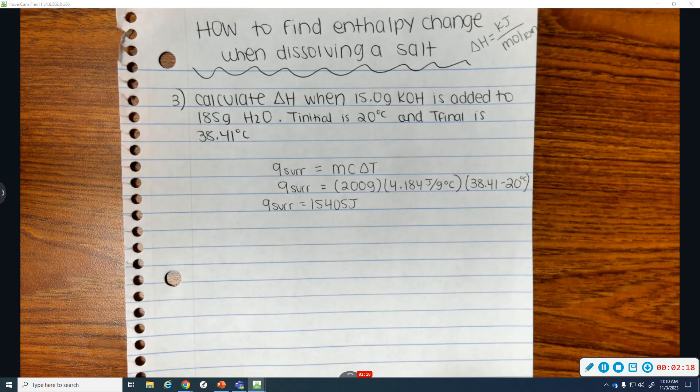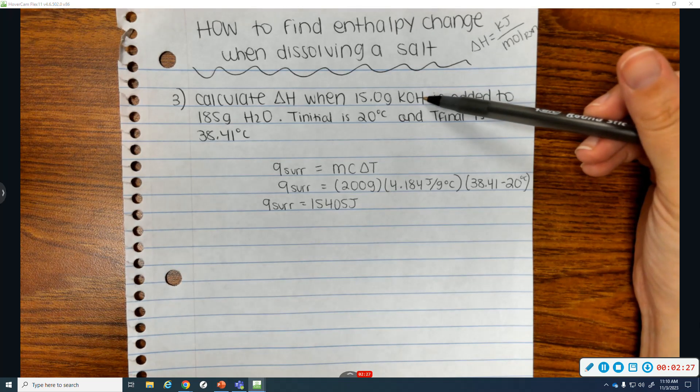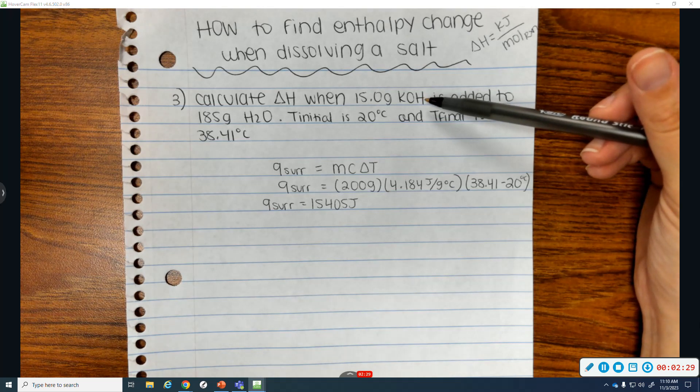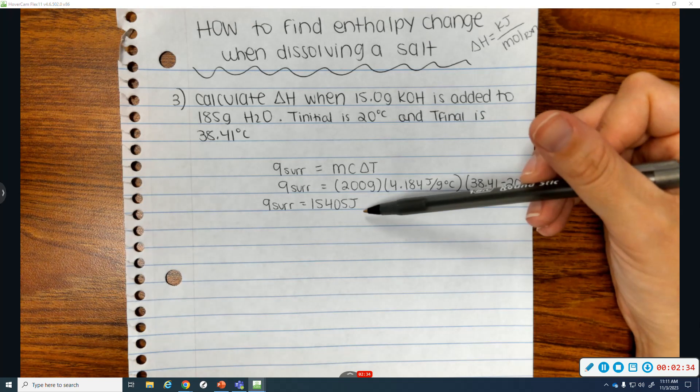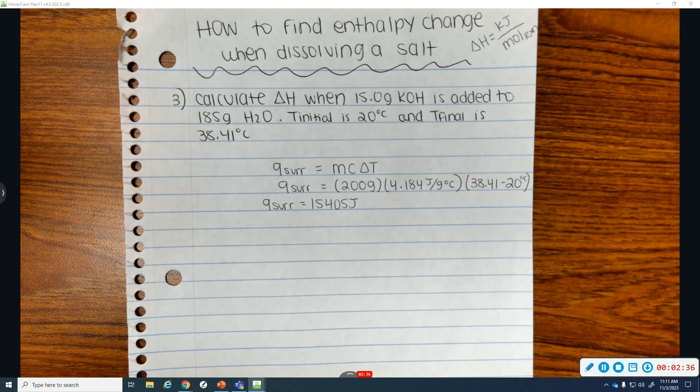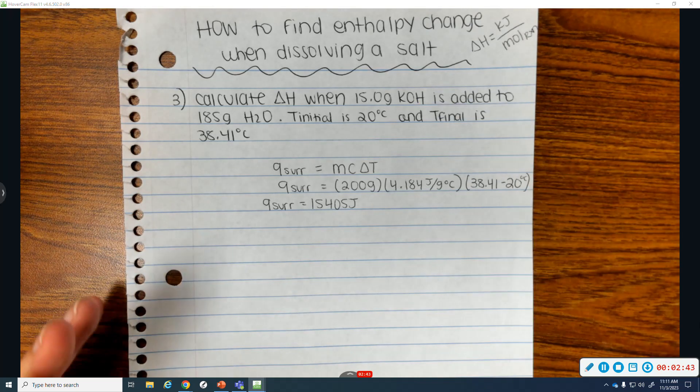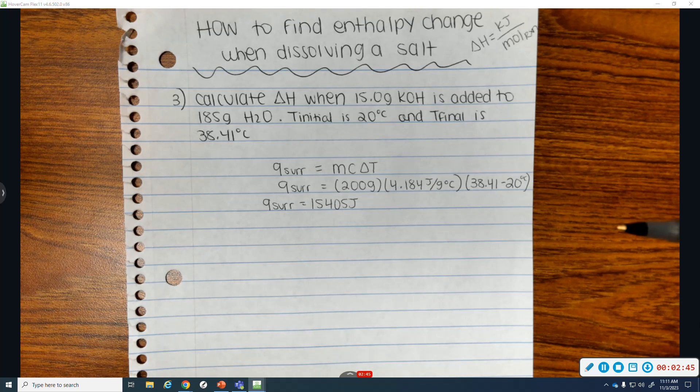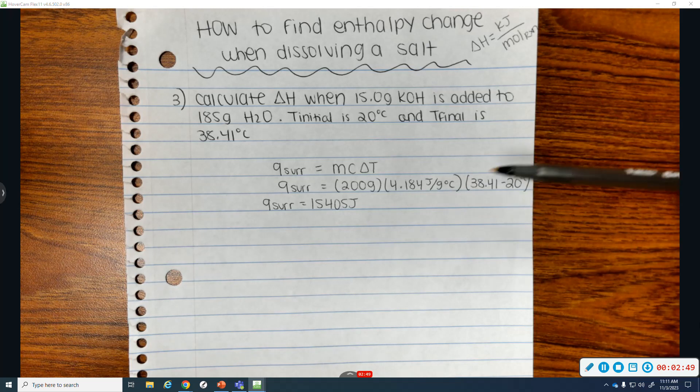So that is the amount of heat that the surroundings have absorbed. But when I want to find enthalpy change, I'm trying to find the enthalpy change for KOH, which is dissolving in water. That is the system. This is for the surroundings because you get the temperature of the surrounding water. So the water's temp has gone up, which means when that KOH is dissolving, it is giving off heat. It's an exothermic change because it's made the surrounding water's temp go up.